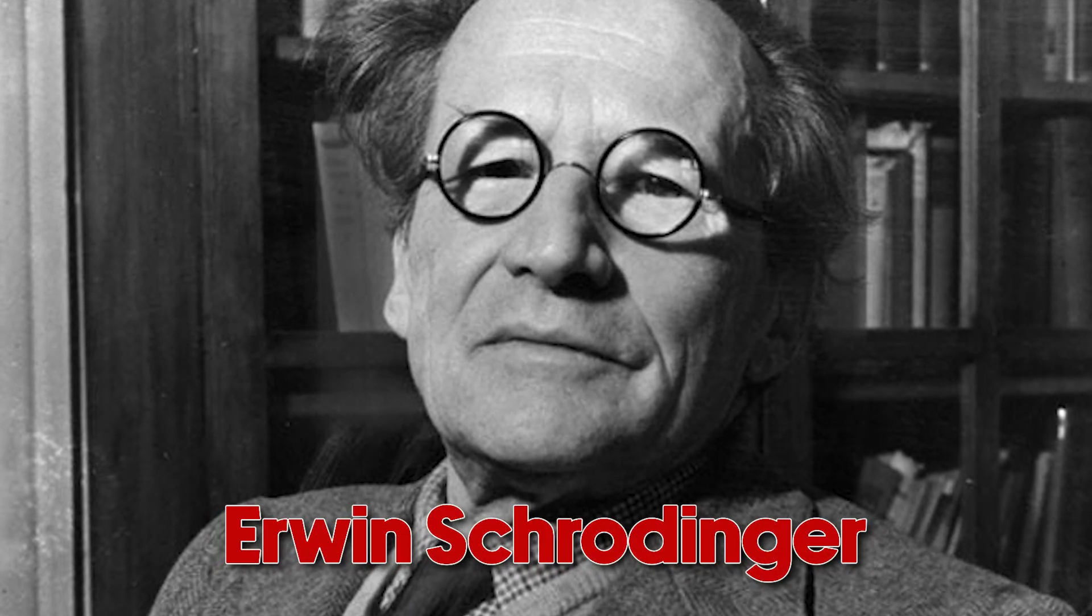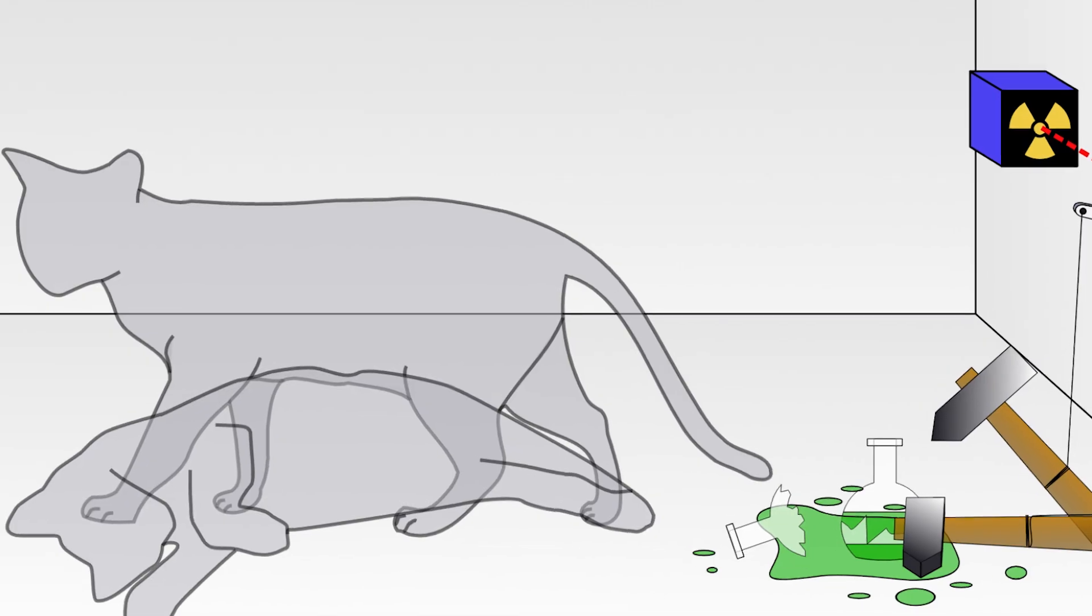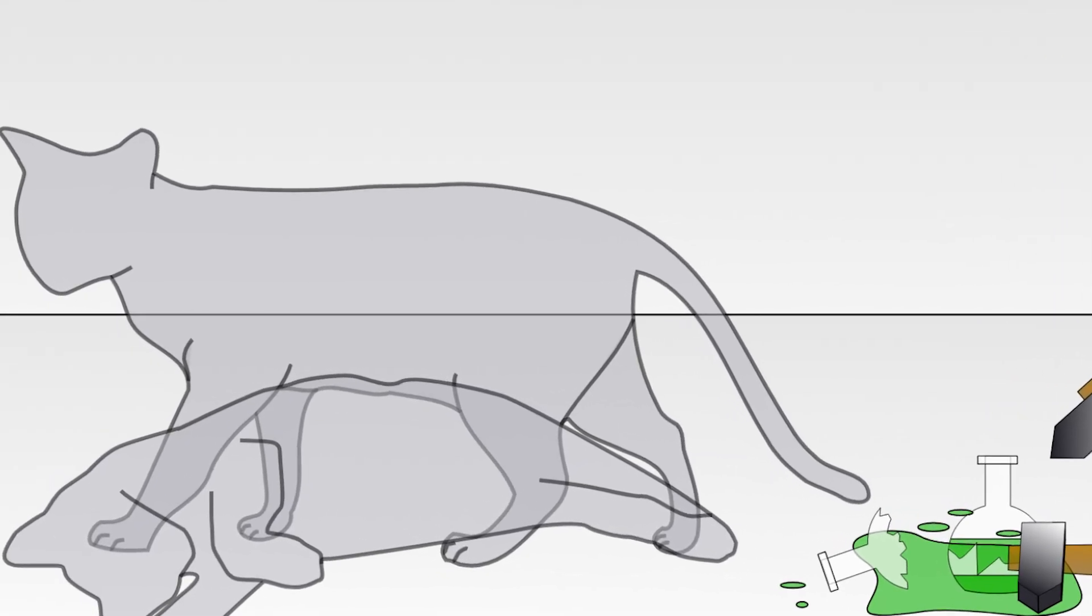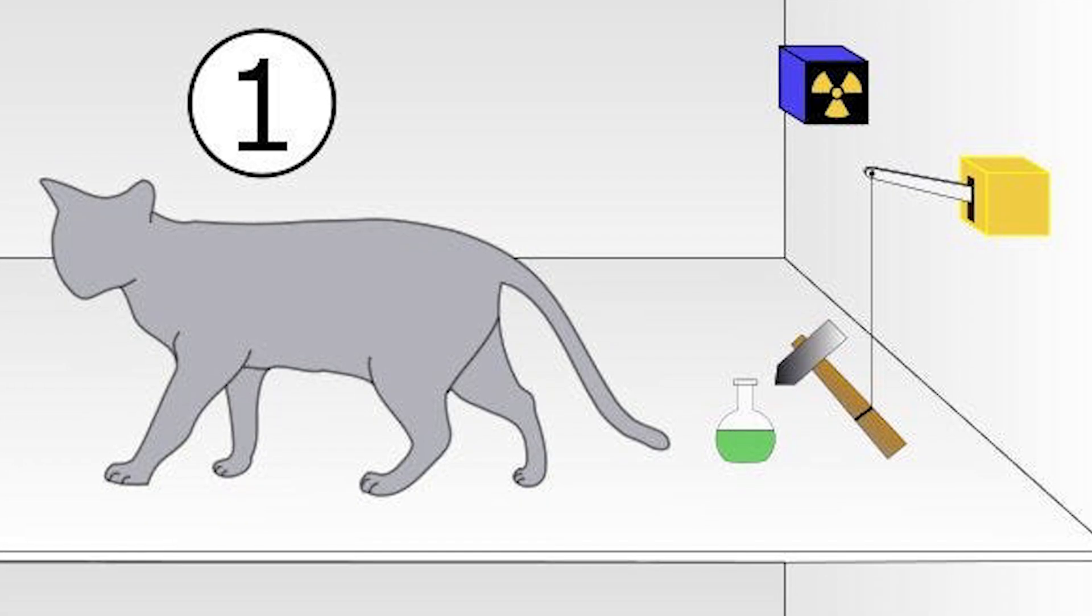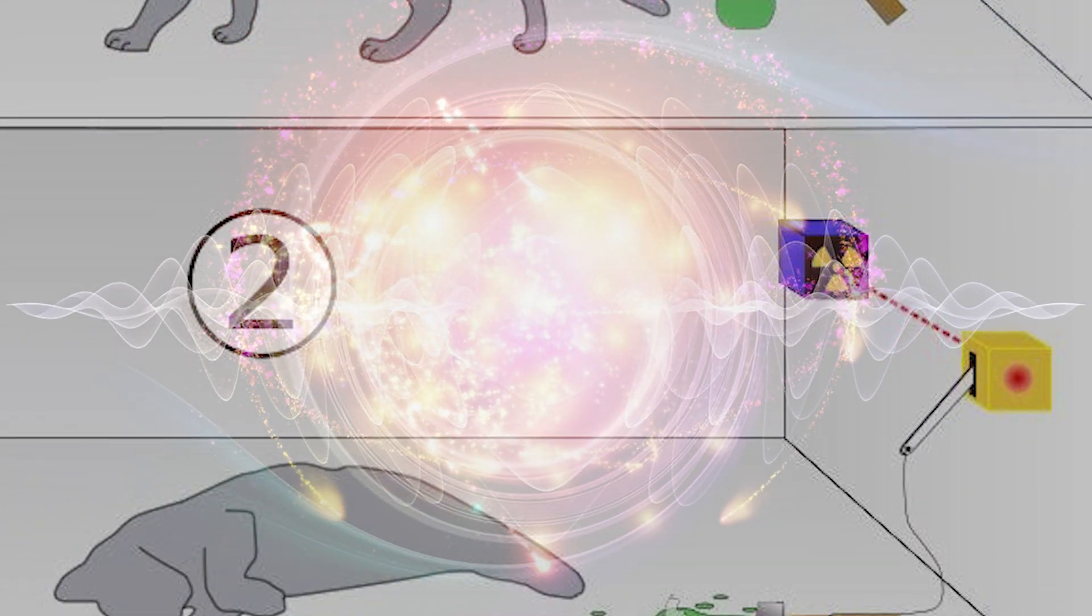Schrödinger's famous thought experiment, Schrödinger's cat. Imagine a cat in a box that's both alive and dead until you open the box to check. It's a weird way of explaining the reality of quantum systems. They're in all possible states until observed.